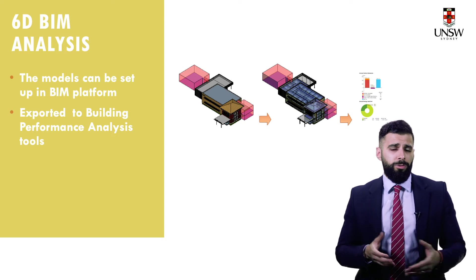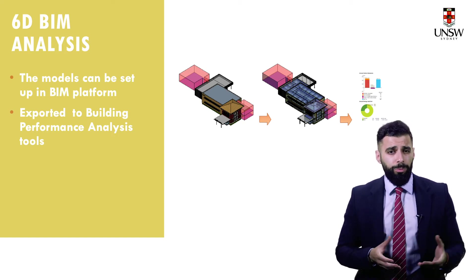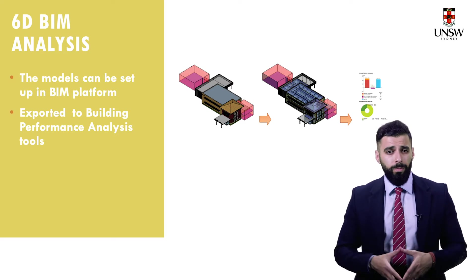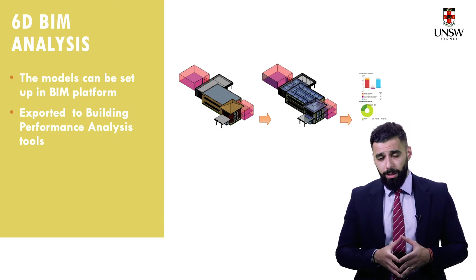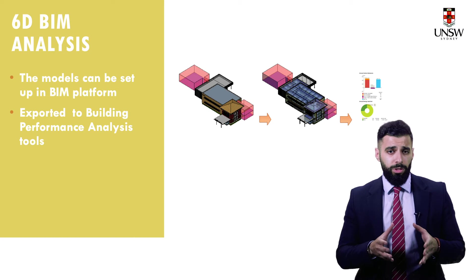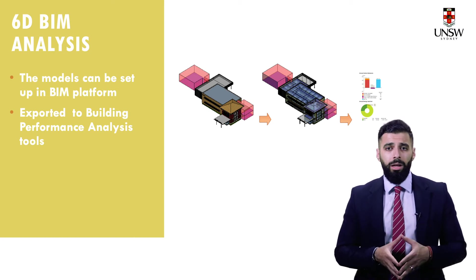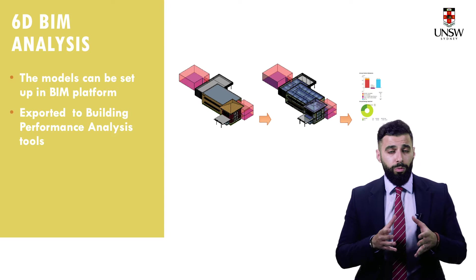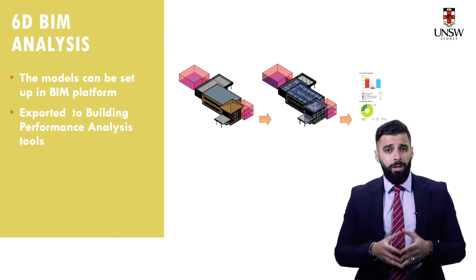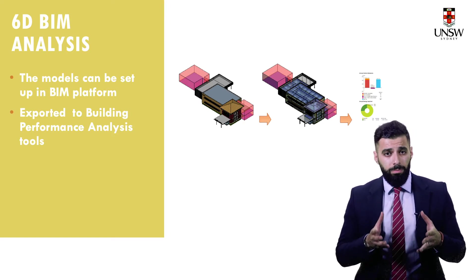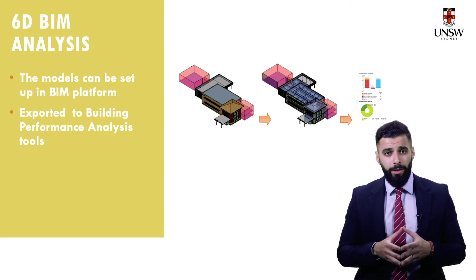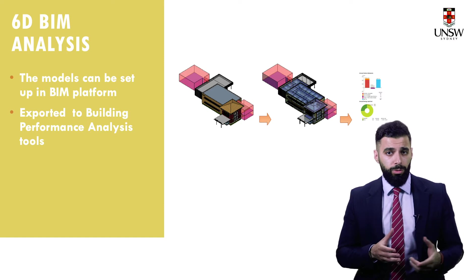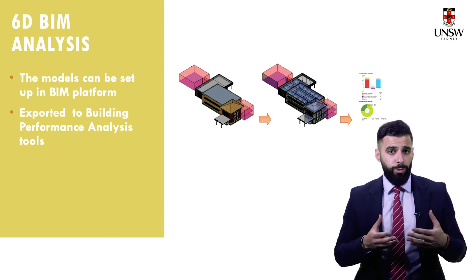What sort of sustainability analysis can we perform using 6D BIM? We can use BIM to help guide our decision making in the sustainability life cycle assessment of a building. I will mention four types of sustainability analysis that I have conducted on building projects in the past. Number one: deciding on building design parameters that ensure a passive design, thus enabling the use of natural resources for heating and cooling.